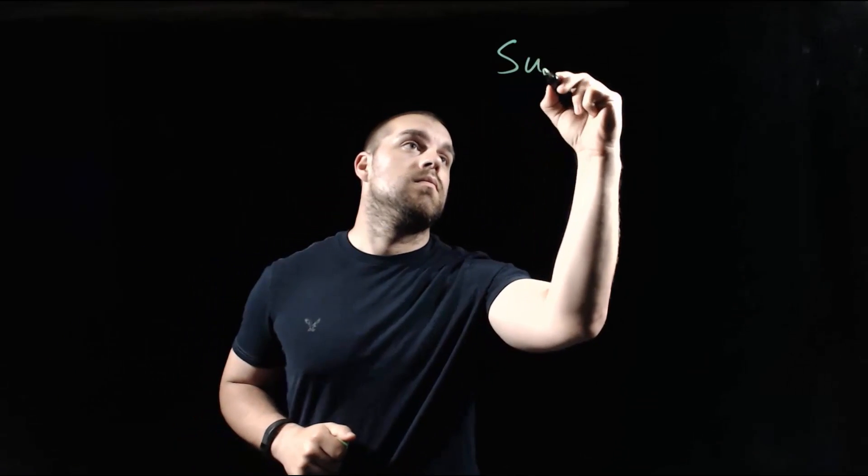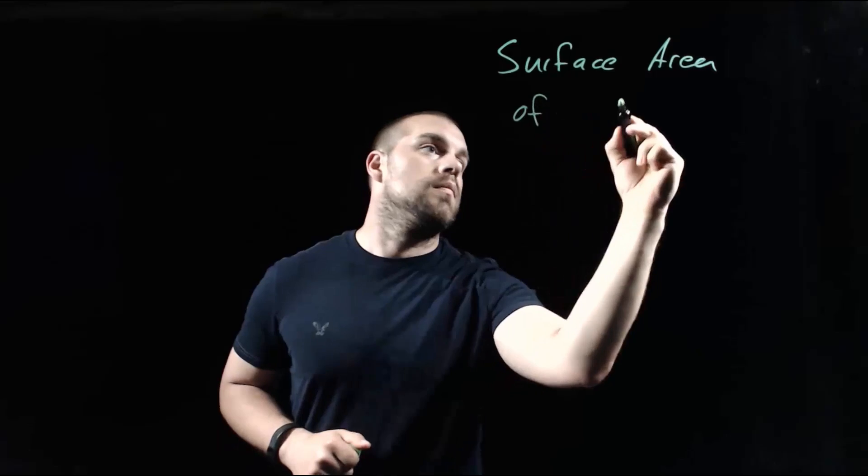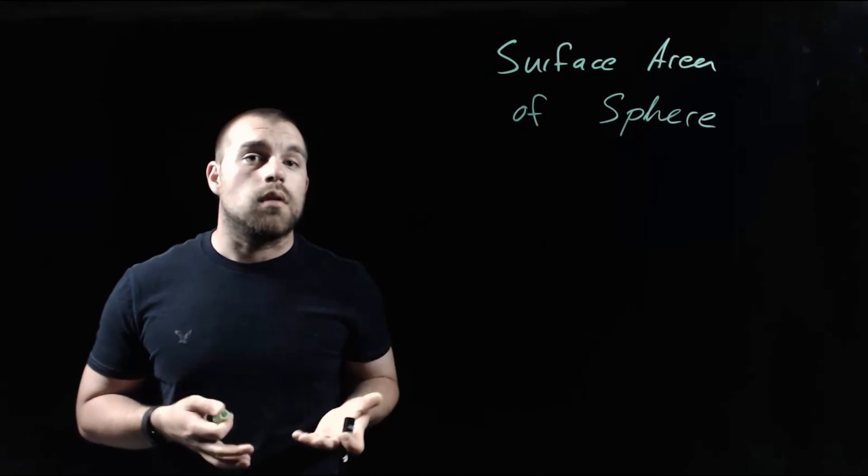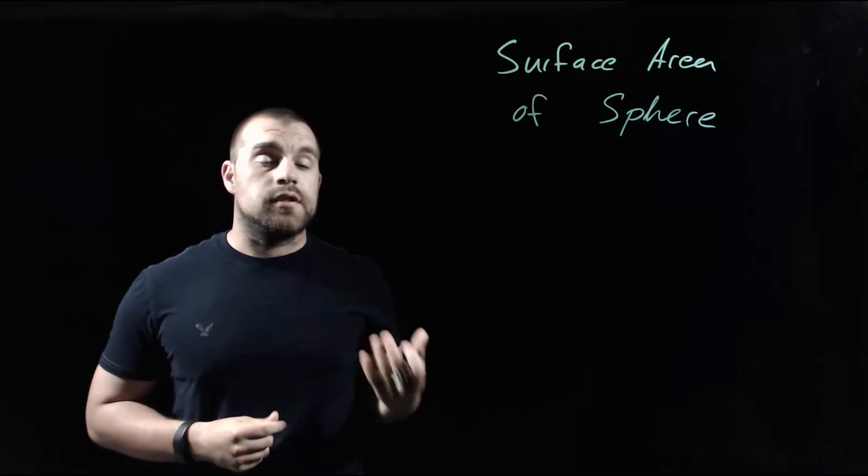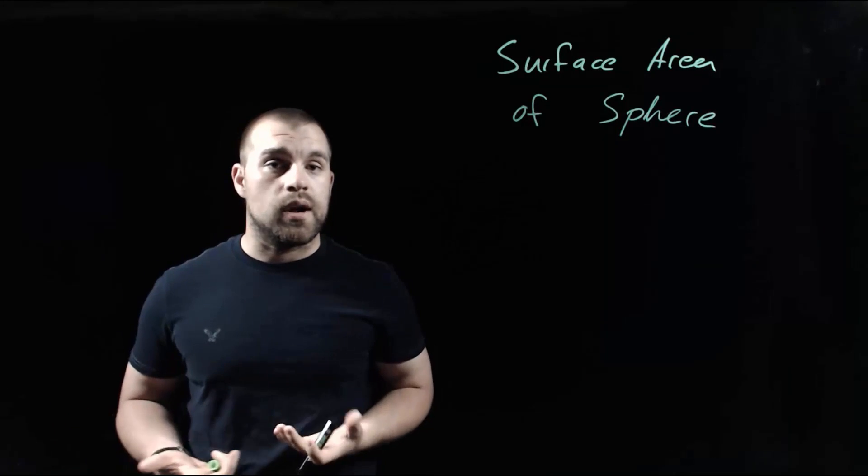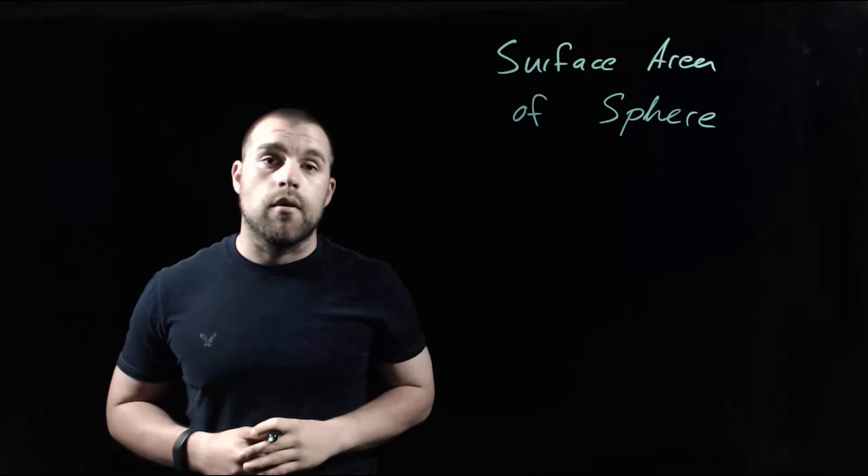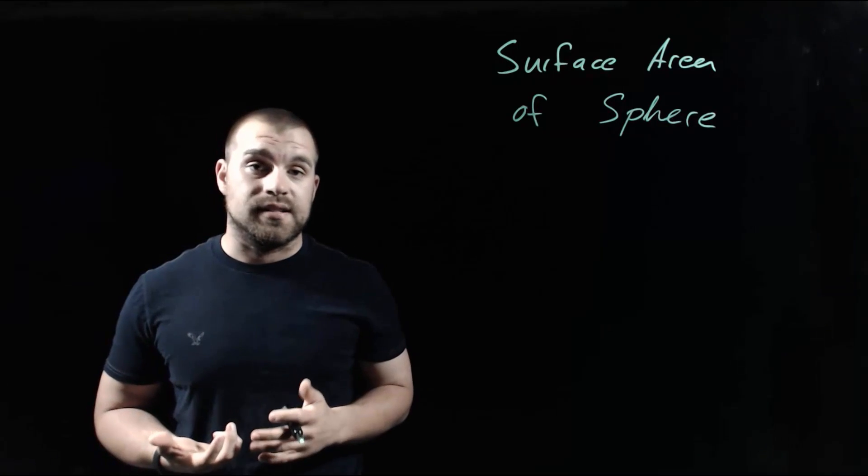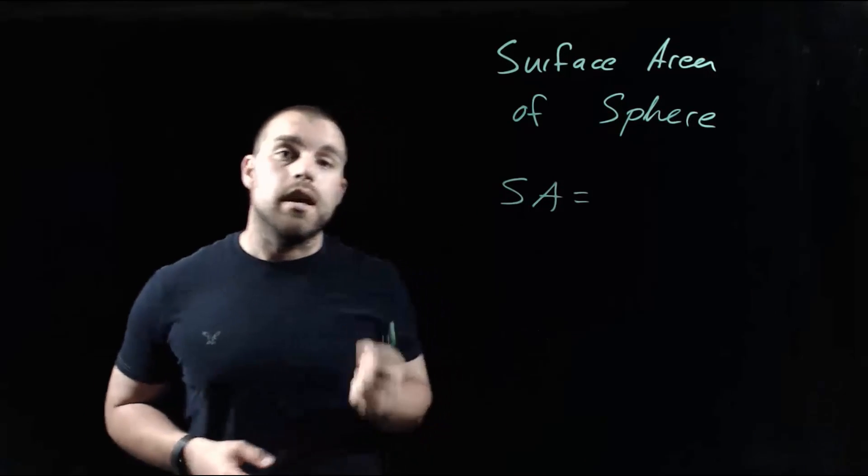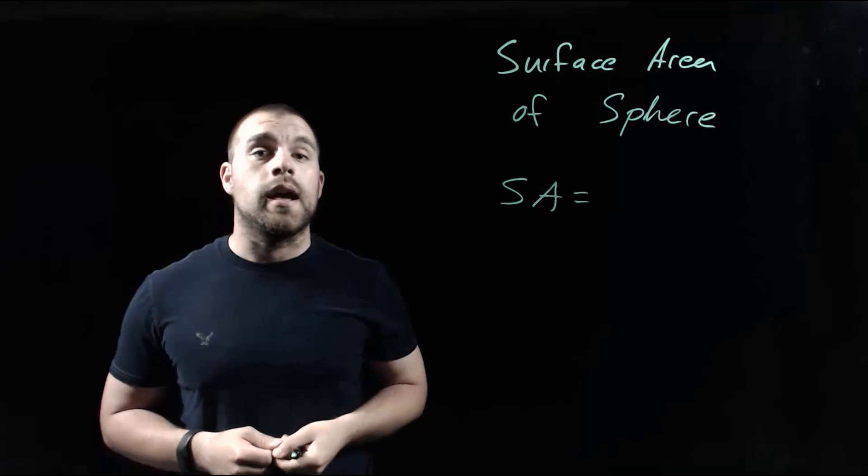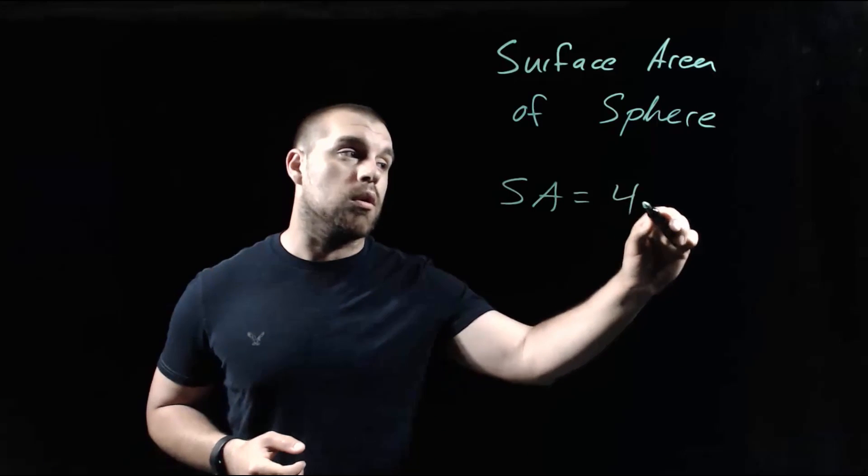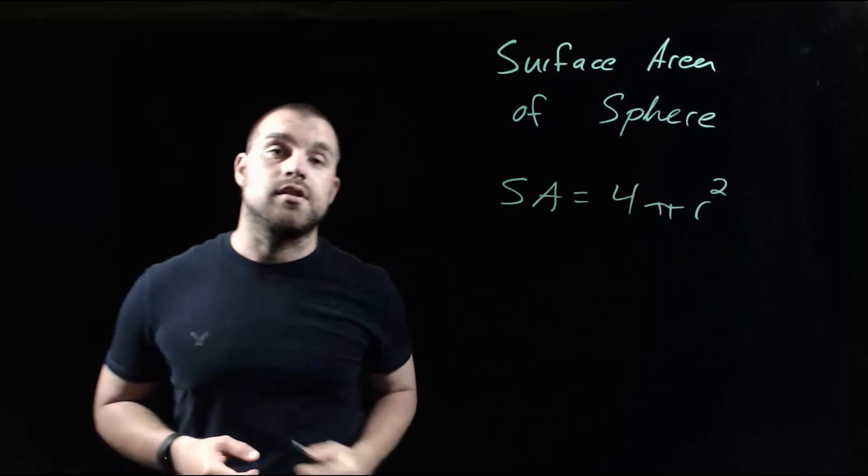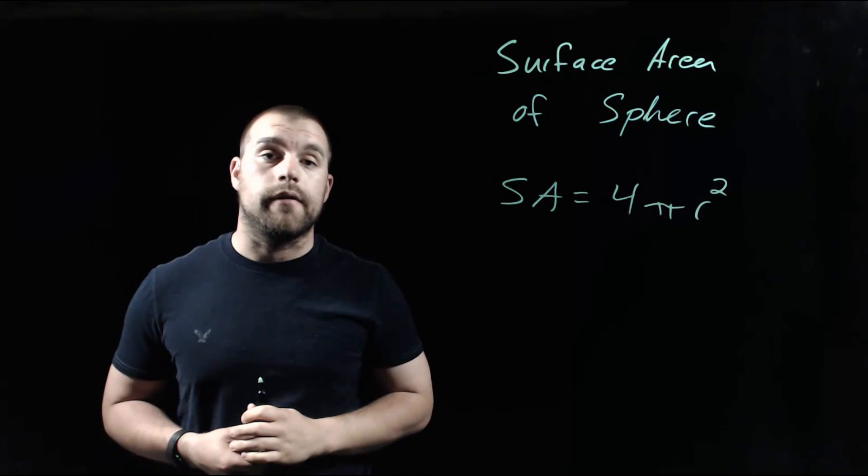If we're talking about surface area of a sphere, if we think back to circles, the area of a circle is πr² or π times the radius squared. The surface area formula for a sphere is very similar. To find the surface area of a sphere, it's still related to the radius, but this time we do 4 times π times the radius squared, or 4πr².